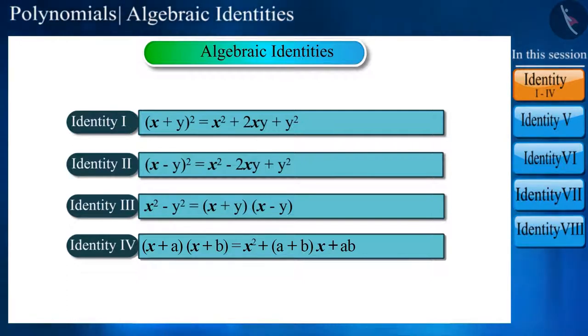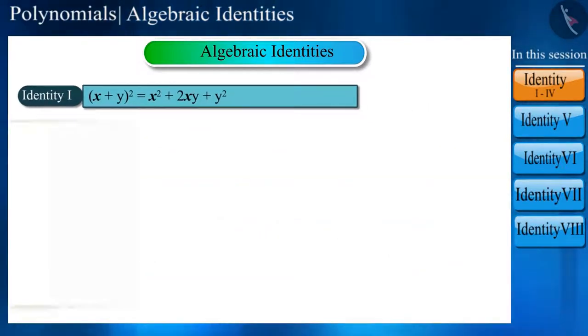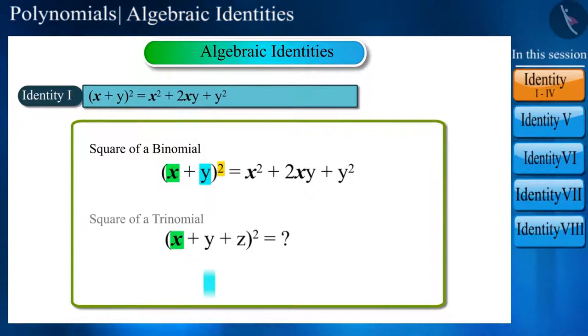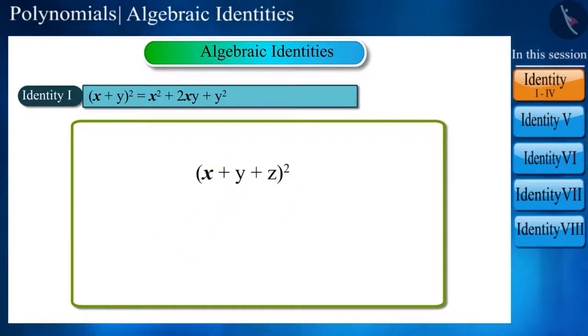Identity 1: Using the identity for the square of a binomial, we will derive the identity for the square of a trinomial. So let's apply Identity 1: (x + y)² = x² + 2xy + y² to a trinomial (x + y + z)².